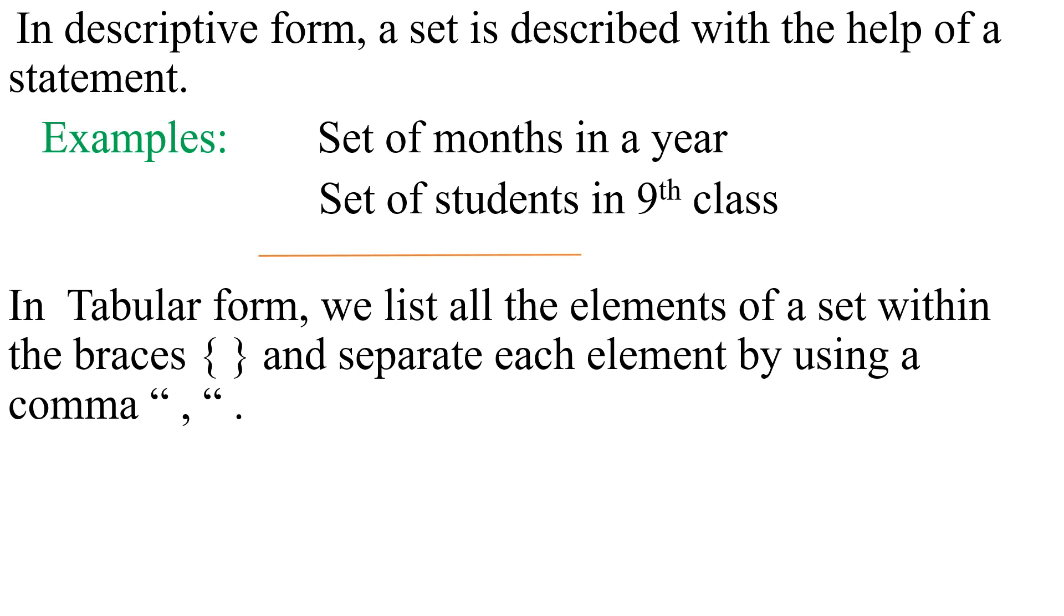As in examples, all the elements of the set of vowels are listed in the braces as a, e, i, o, u. In the second set, one, two, three, four, five is the set of first five counting numbers.